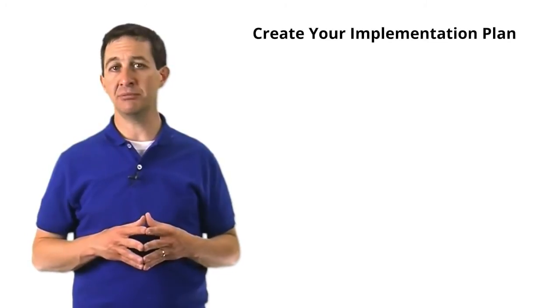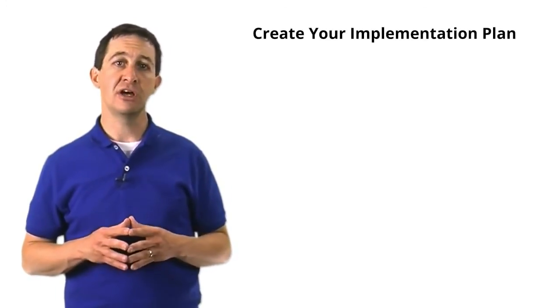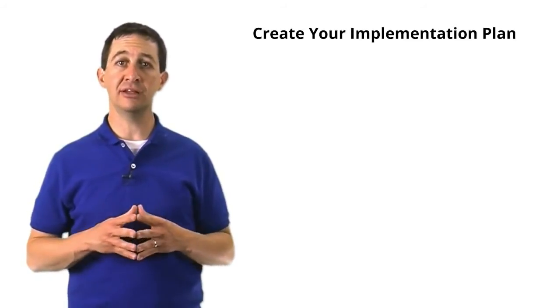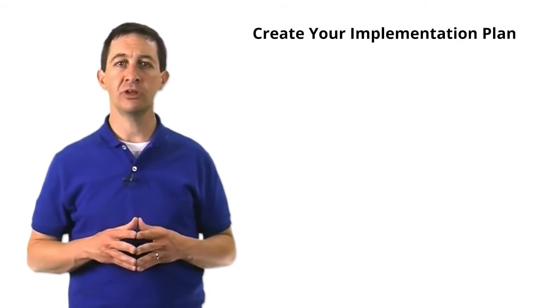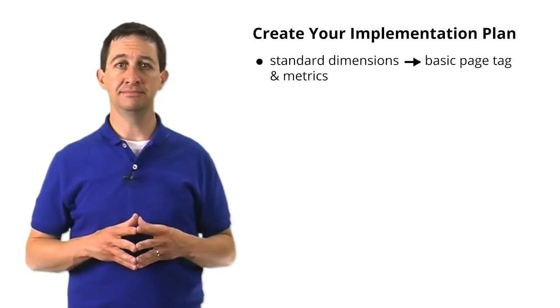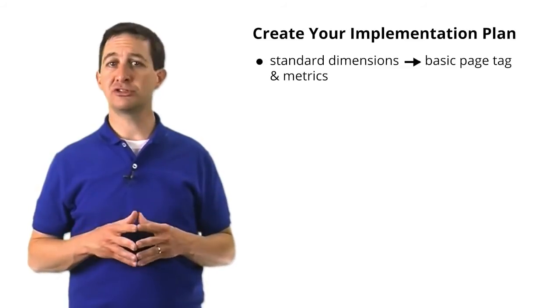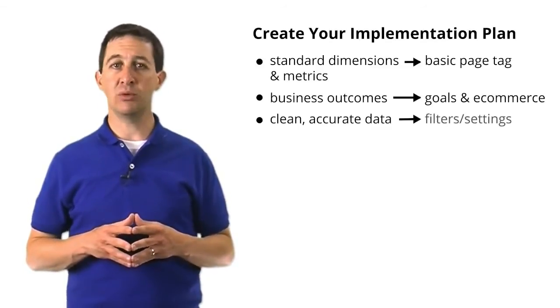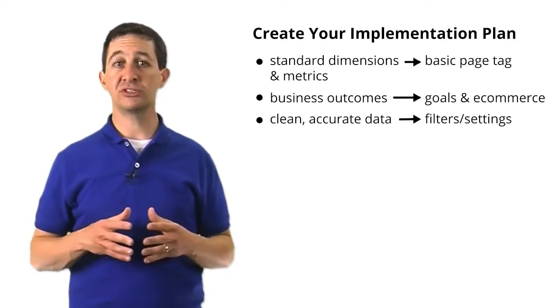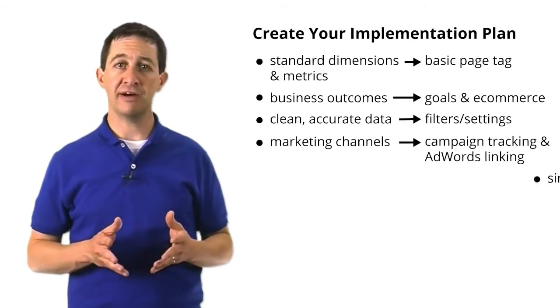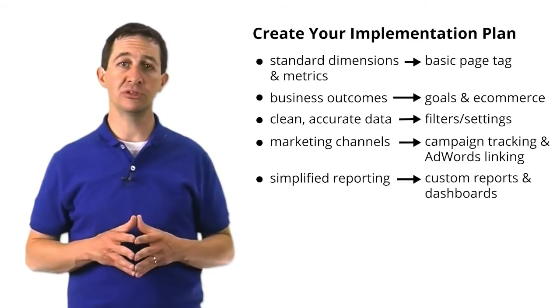Once you know both the business requirements and details about your technical environment, the next step is to create a basic implementation plan. In this plan, you will document the features of your analysis tool that you'll use to capture the data you need. To get any data, you need to implement the standard Google Analytics page tag — this gives you the bulk of the data you'll need. Looking back at your measurement plan, you need a way to track KPIs; you can do this using goal tracking, or the eCommerce module if you're an eCommerce business. Another feature you may want to use is filters, which normalize your data so that your reports are more accurate and useful. To properly track marketing campaigns, you should use campaign tracking and AdWords linking. Finally, you can use custom dashboards and custom reports to simplify the reporting process, which can help save a lot of time.